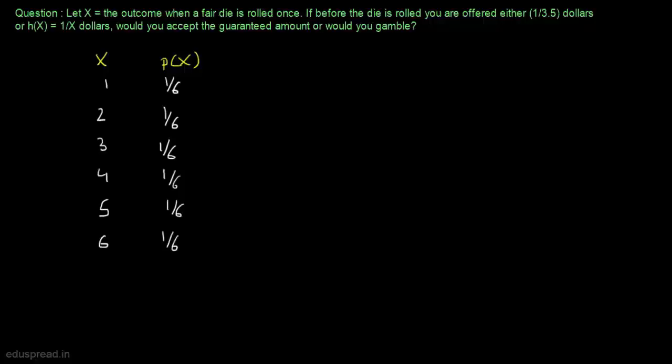To take a decision whether to accept the guaranteed amount or gamble, we must calculate the expected amount we can get if we gamble. That means we should calculate the expected value of h(x). We are given in the question that h(x) is equal to 1 divided by x.